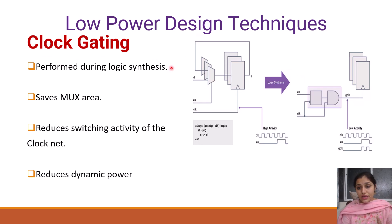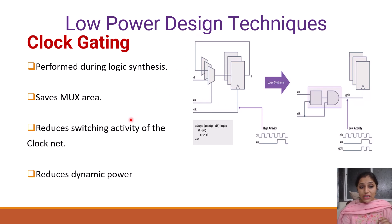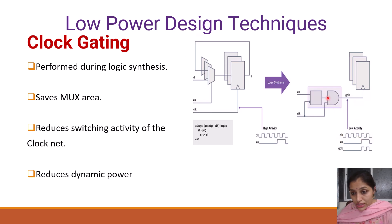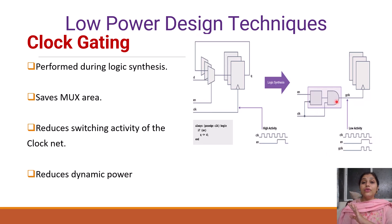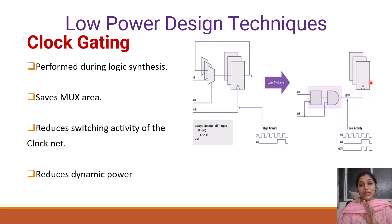In clock gating, the clock is given through a gate — let's say an AND gate — which removes the need for multiplexors and saves multiplexor area. Here, one input to the AND gate is the clock and the other input is the enable signal. In an AND gate, when both inputs are 1, only then is the output 1; otherwise the output is 0. So when enable is 0, the AND gate will not generate any output, and this flip-flop will not receive any clock.